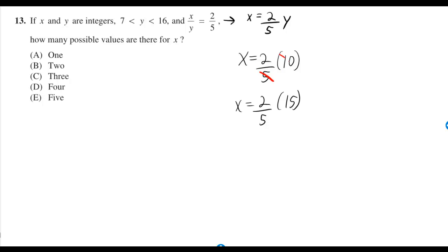You can cancel the 5 and the 10 to get a 2. Likewise, you can cancel the 5 and the 15 to get a 3. 2 times 2 is 4, and 2 times 3 is 6.